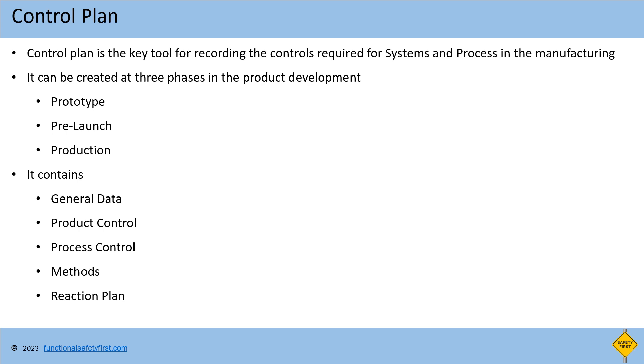Another example: if a short circuit is detected during ICT, then the mitigation action is to route the part to the rework station to analyze the causes of the failure.